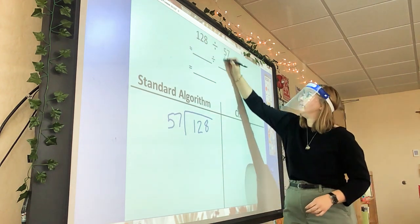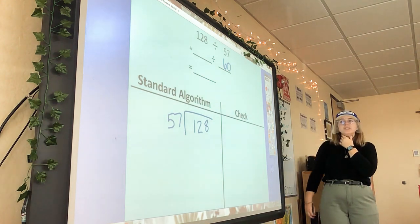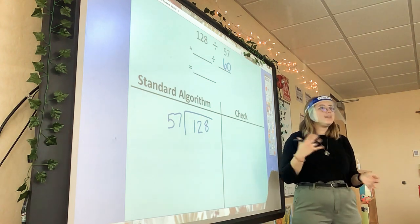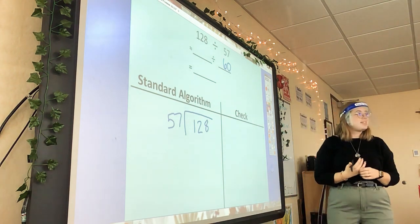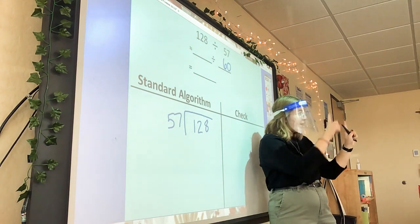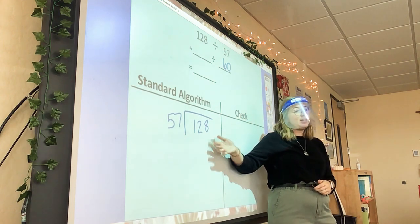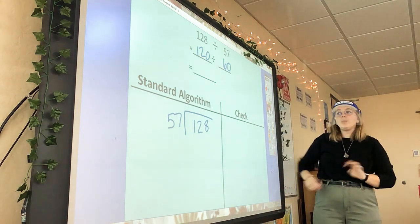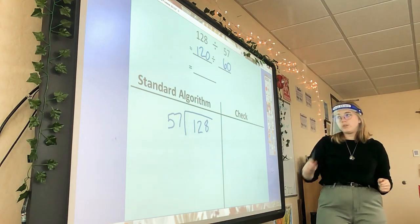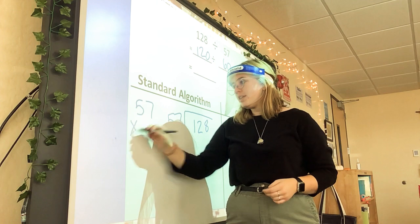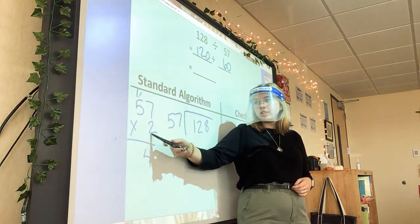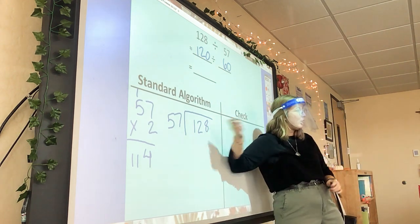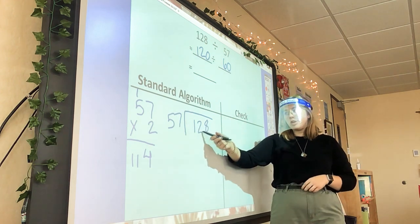57 is pretty close to 60. So using that, I can start thinking of my multiples of 60. 60 times 1 is 60. 60 times 2 is 120. My dividend is 128, so that's pretty close. So about how many times do we think 57 is going to go into 128? 2. Let's try it. 57 times 2: 2 times 7 is 14, 2 times 5 is 10, plus 1 gives me 114. Can I fit another 57 without going over? No. So we're going to stick with 2. 57 goes into 128 two times.